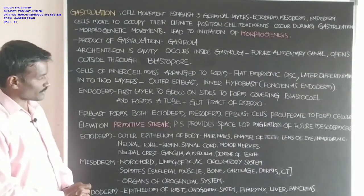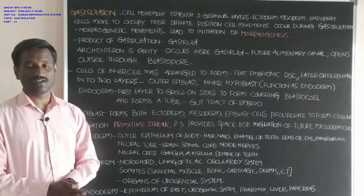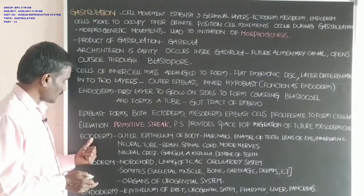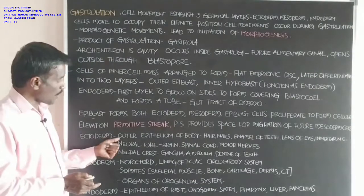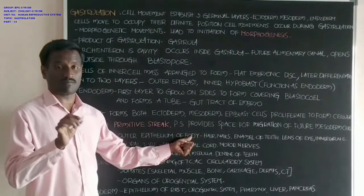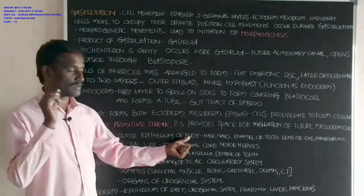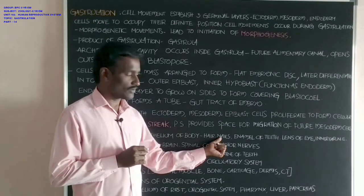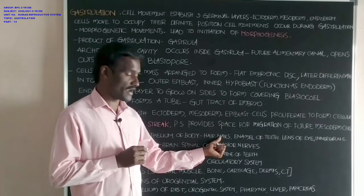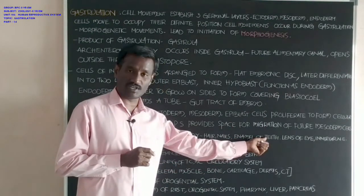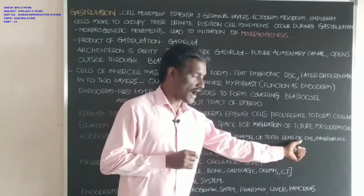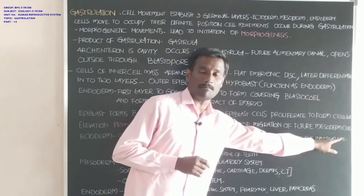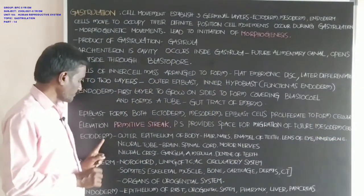Regarding the ectoderm: from the ectoderm, the outer epithelium of the body is produced, along with body hair, nails, and enamel of teeth. The lens of the eye, inner ear, and nasal or olfactory epithelium are all produced from the ectoderm.